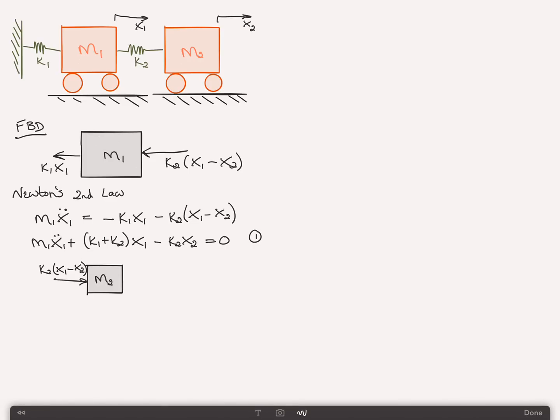Doing Newton's second law again on mass number two, we find that we get M2 X2 double dot is equal to positive sign this time, K2 X1 minus X2, which we'll rewrite as M2 X2 double dot plus K2 X2 minus K2 X1 is equal to zero. That's equation number two.